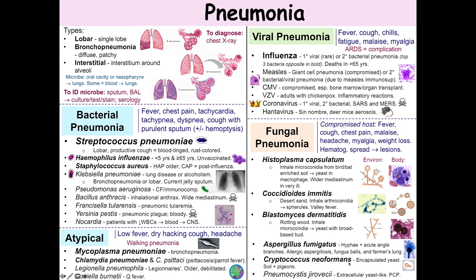Cryptococcus neoformans is also monomorphic but found just as a yeast. It's an encapsulated yeast with a polysaccharide capsule that can be seen nicely in an India ink wet mount. It is found in soil enriched in pigeon droppings, and it is inhaled into the lungs where it can cause fungal pneumonia. It can also hematogenously disseminate to the meninges to cause cryptococcal meningitis, particularly in AIDS patients. In patients with cryptococcal meningitis, you do not often see lung symptoms.